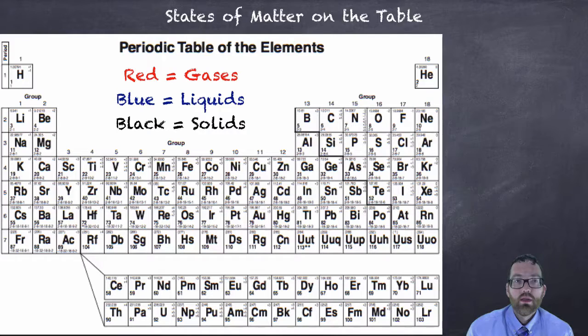The red ones are hydrogen and helium, those of course are gases, but also nitrogen, oxygen, fluorine and chlorine. Hopefully you know those are gases. And all of group 18. Group 18's name is the noble gases, so if you can remember that you'll know they're all gases.